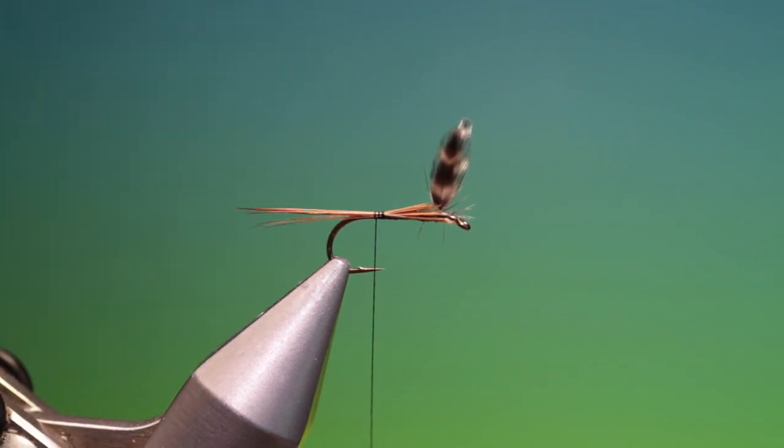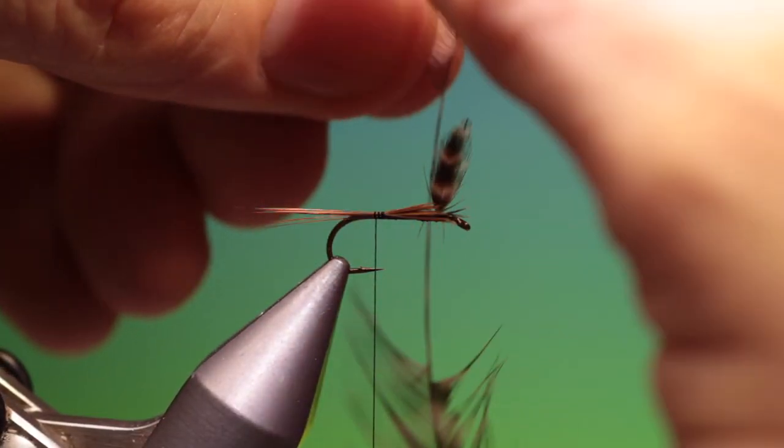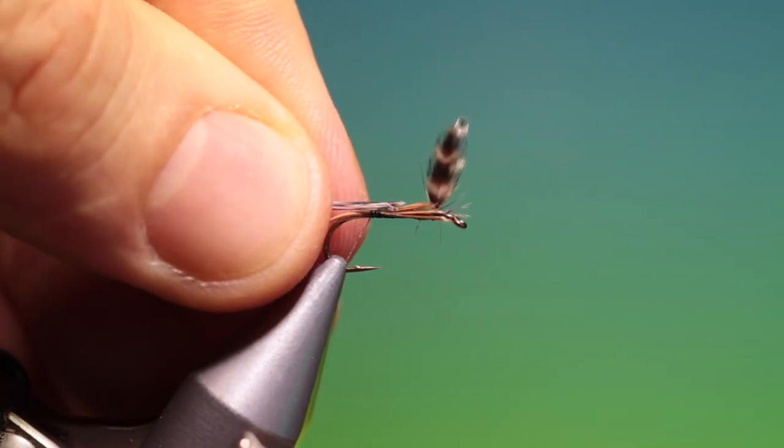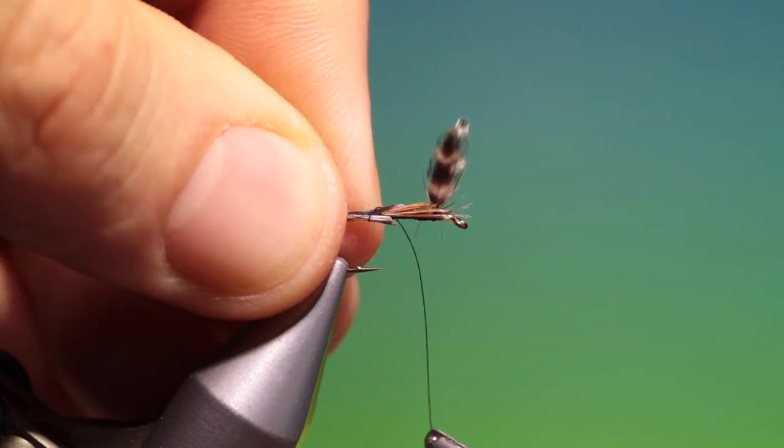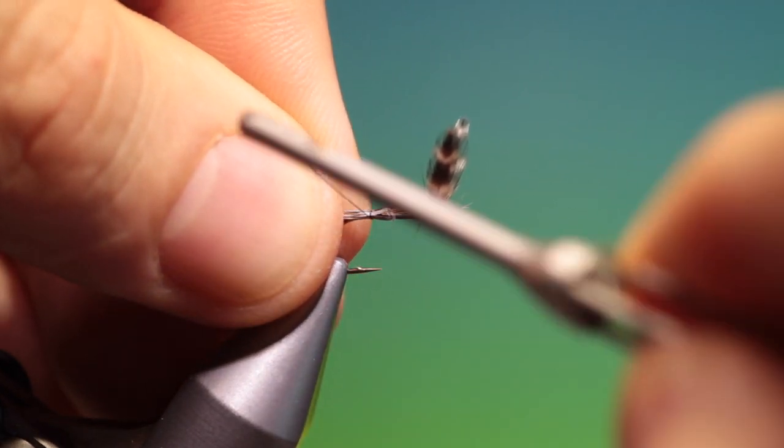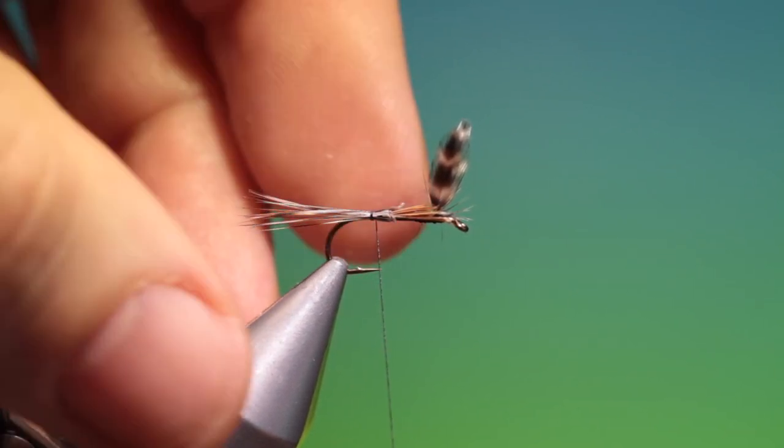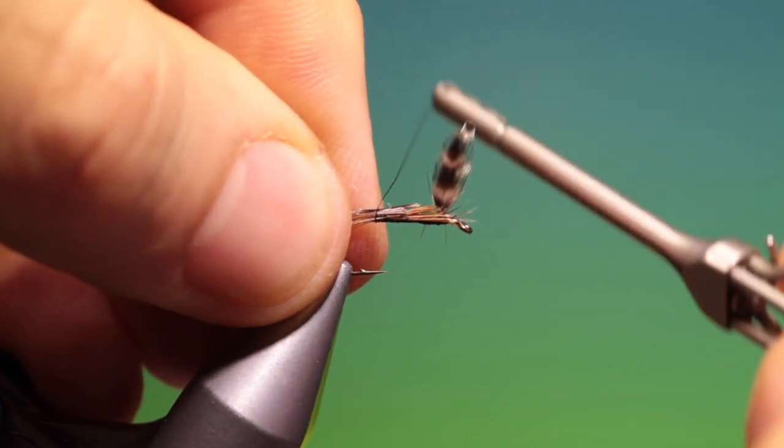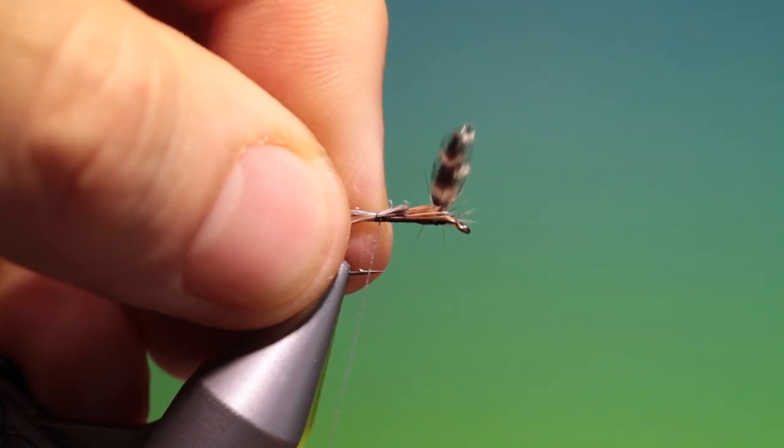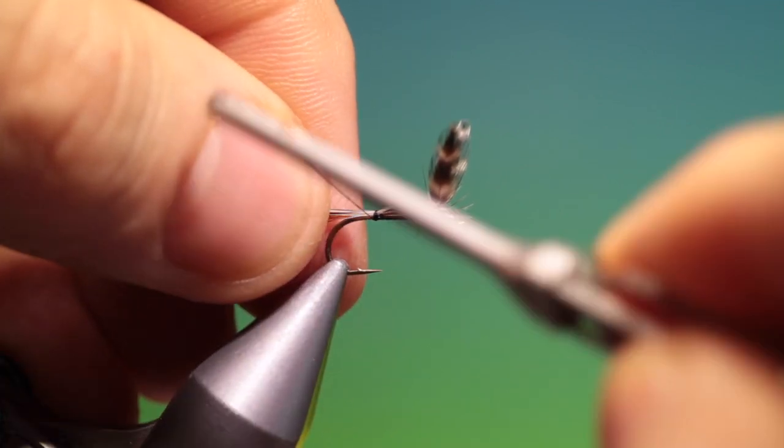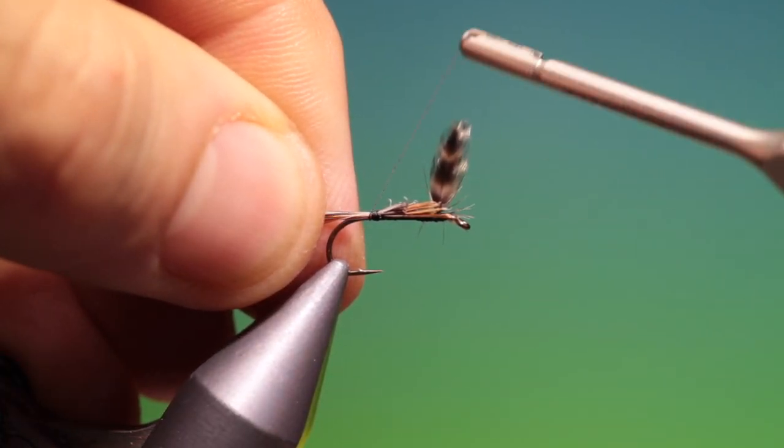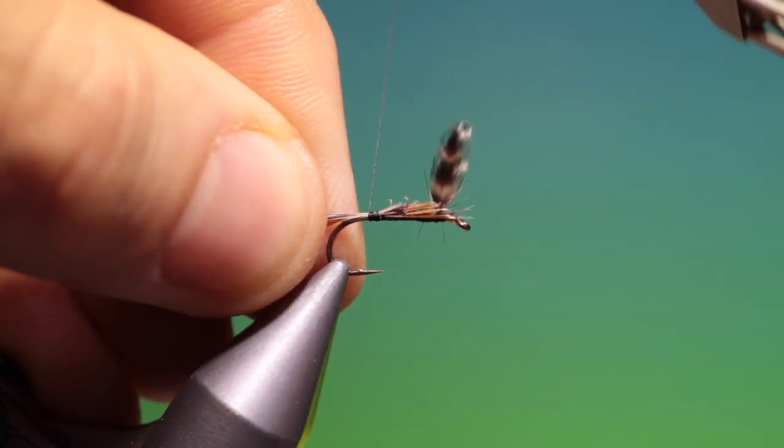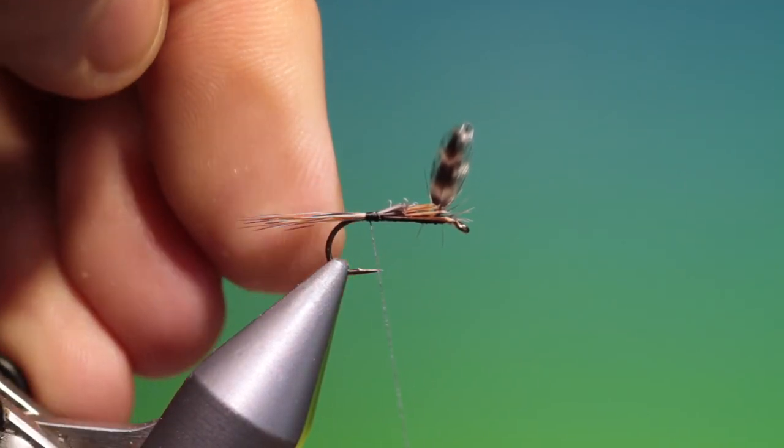A couple more turns. We need some grizzle fibres from a cock hackle, pull those off. These want to be on top of the brown, a little bit too long. Go back, just correct my thread. Good.